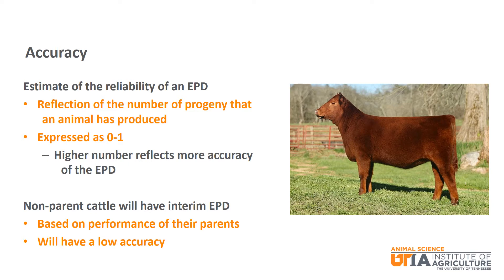This brings up a great question: how do cattle that have not had any offspring already have EPDs? They are assigned interim EPDs that are based on the performance of their parents. These values will have a low accuracy value but do give an indication of expected future performance of their calves. We will now highlight a few of the more common EPDs, what they mean, and how they are used.